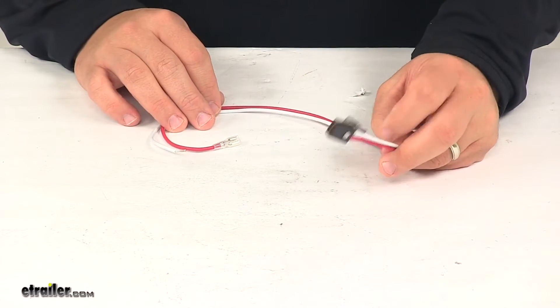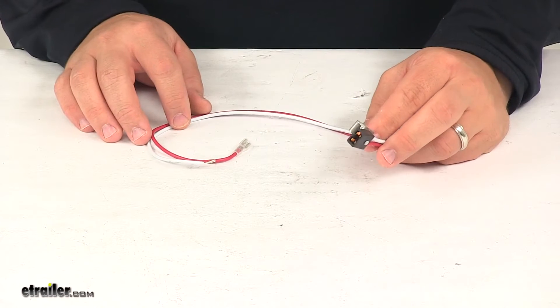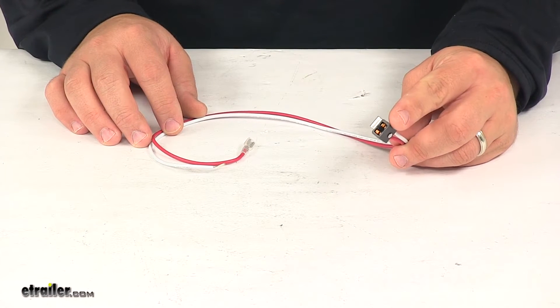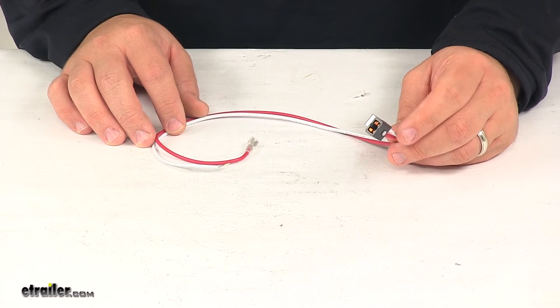Today we're taking a look at the replacement lamp socket for Ventline RV range hoods. This replacement lamp socket provides the base for the range hood light bulb. The light bulb is not included.